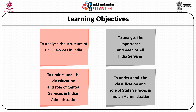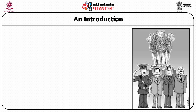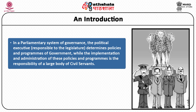Now giving an introduction and starting with the lecture, firstly I would like to introduce you with the structure of the state. Every state has three wings: legislature, executive and judiciary. In India, we have a parliamentary system of governance where the political executive is responsible to the legislature. Legislature is responsible for policy making and the political executive, through the class of civil servants who are the permanent executive, is responsible for the implementation of the policy.